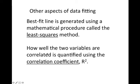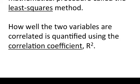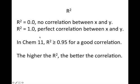Next thing to find out is whether the line fits the data well or not. The reason is because you can draw a line through pretty much any collection of data points. So the line equation is only meaningful if the two variables are correlated. To determine whether two variables are correlated or not, we use a parameter called the correlation coefficient, which is symbolized as R-square. The value of R-square ranges from 0, where there's no correlation between X and Y, to 1.0, where there's perfect correlation between X and Y. In CHEM 11, we would consider X and Y to be well correlated if the R-square is 0.95 or higher. Obviously, the higher the R-square, the better the correlation.